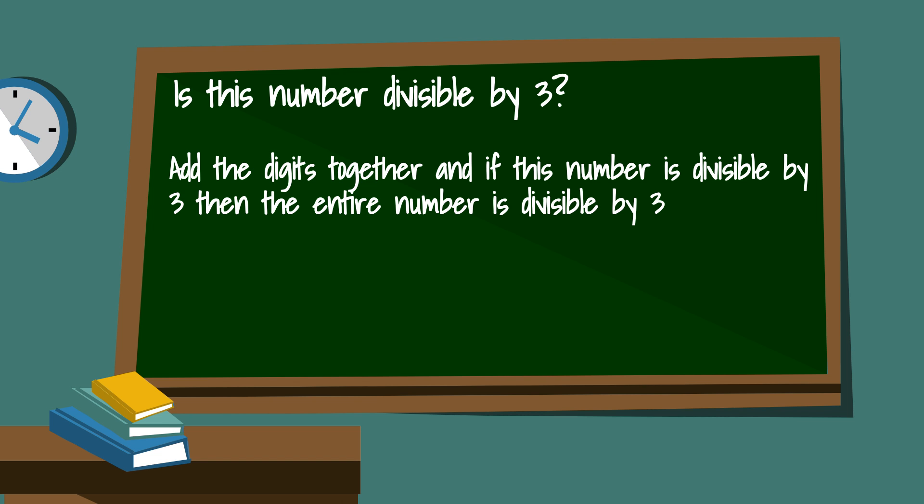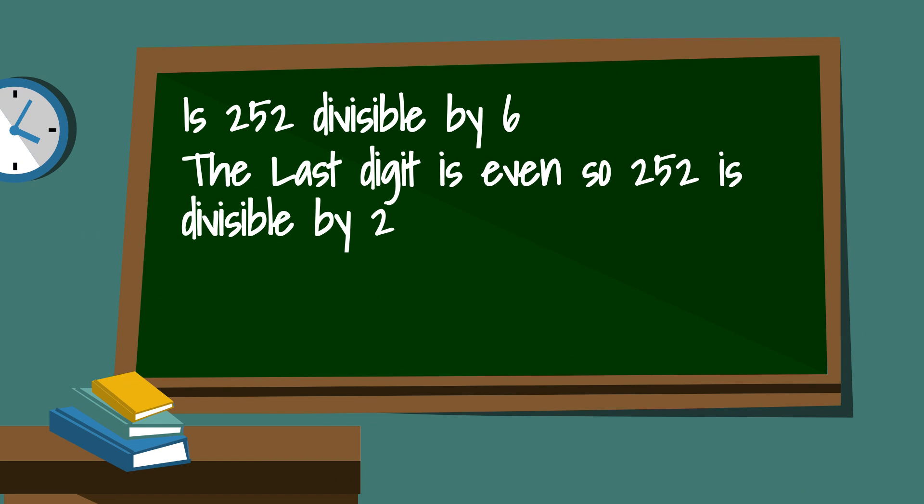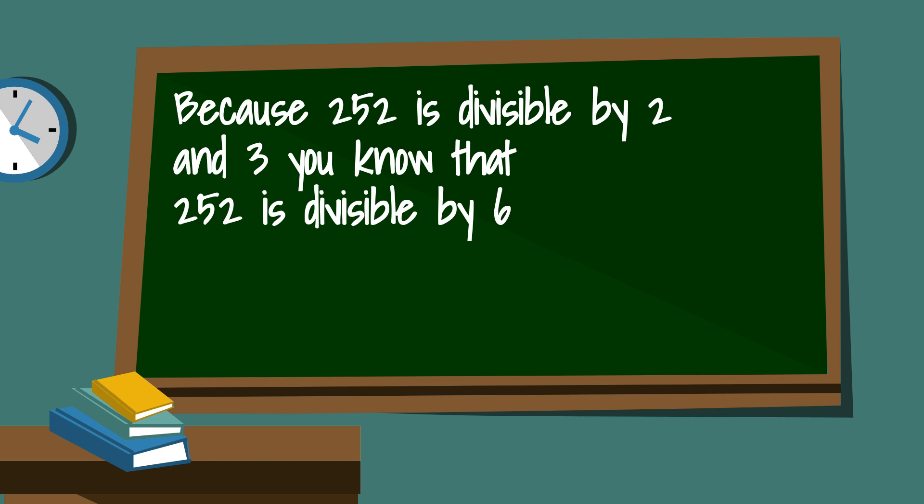So let's look at two examples. First is 252 divisible by 6. It does end in an even number so it is divisible by 2. Next if you add the digits together 2 plus 5 plus 2 that equals 9 and 9 is divisible by 3. So 252 is divisible by 6. 6 times 42 is 252.